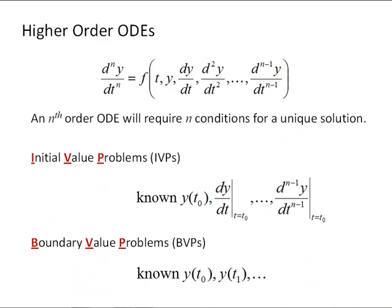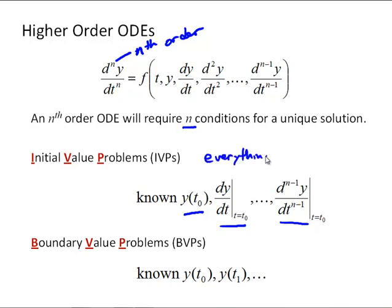In general, a higher-order differential equation — say an nth order, defined by its highest derivative — can be written as a function of t, y, and all the lower-order derivatives involved. That nth-order differential equation requires n conditions to have a unique solution. For an initial value problem, we would know y at t₀, dy/dt at t₀, up to the (n-1)th derivative — everything known at some initial condition t₀ — and then step the solution forward in time.